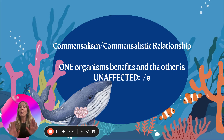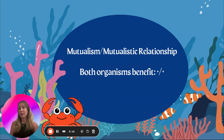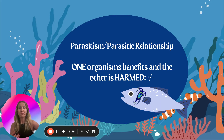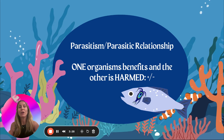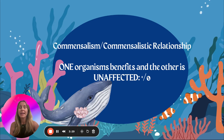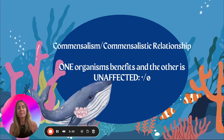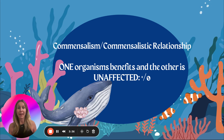Let's recap quickly. Mutualism: both organisms benefit — boxer crab and sea anemone. Parasitism: one benefits, the other is harmed — marine fish and a copepod. Commensalism: one organism benefits, the other goes unaffected — that's our whales and barnacles.